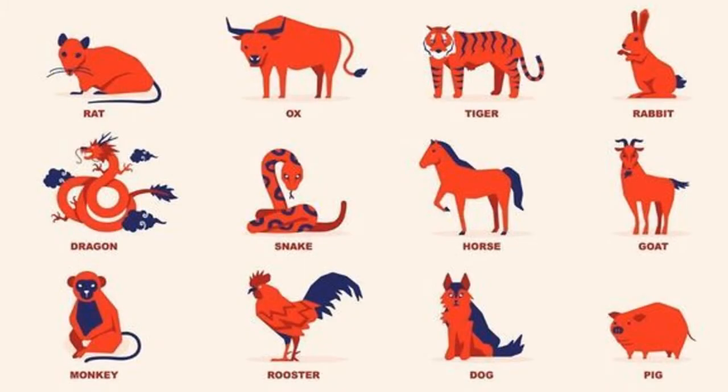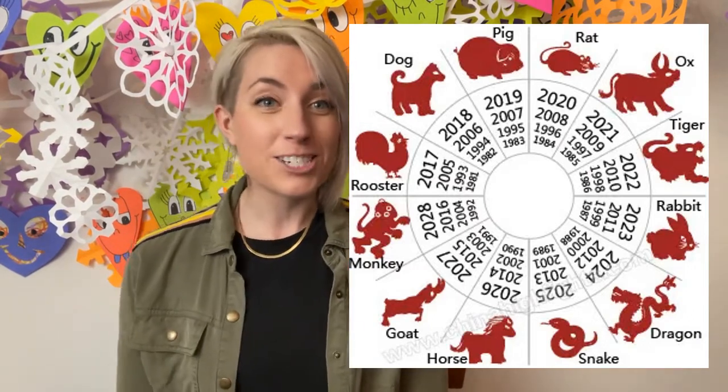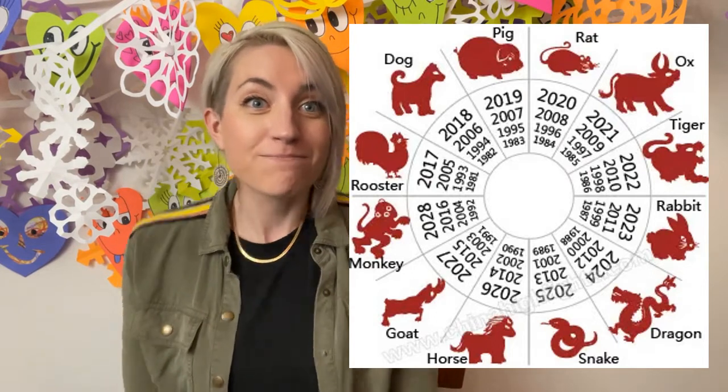The order of the zodiac is: Rat, Ox, Tiger, Rabbit, Dragon, Snake, Horse, Goat, Monkey, Rooster, Dog, Pig. Every single zodiac has different symbols that are pretty cool and important. Last year, 2020, was the Year of the Rat. This year, 2021, is the Year of the Ox — hopefully we'll be tougher, more powerful, able to persevere and fight off everything that came in 2020. You can check out the chart here to find out which zodiac symbol you are. I am a Rabbit!